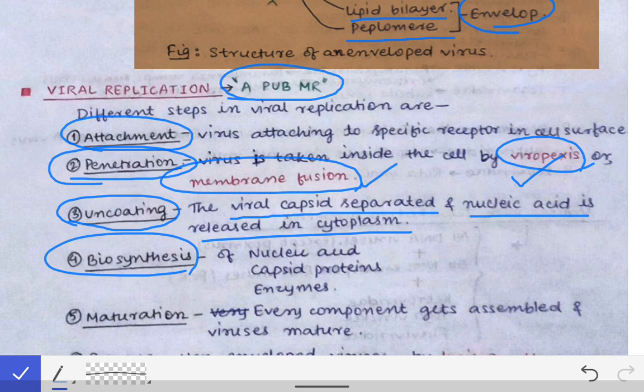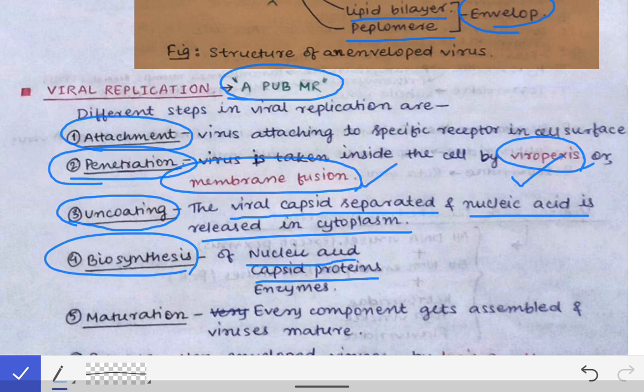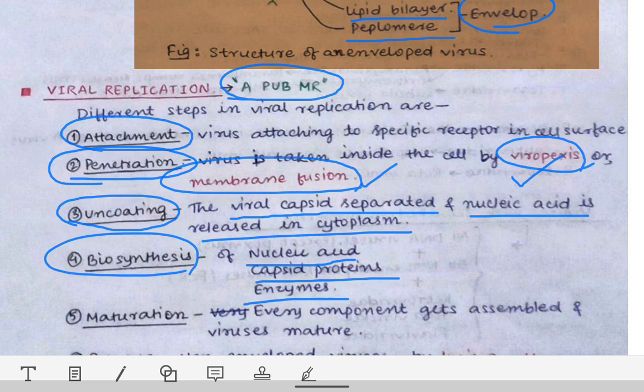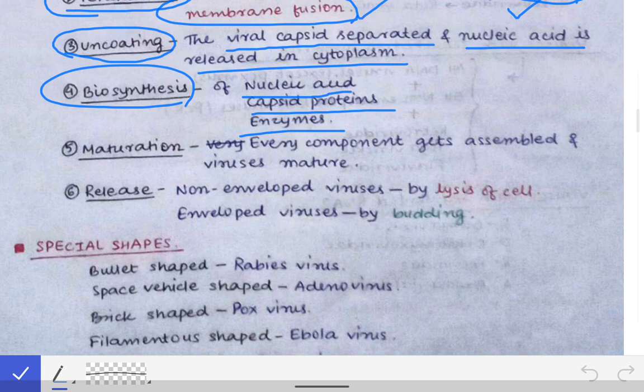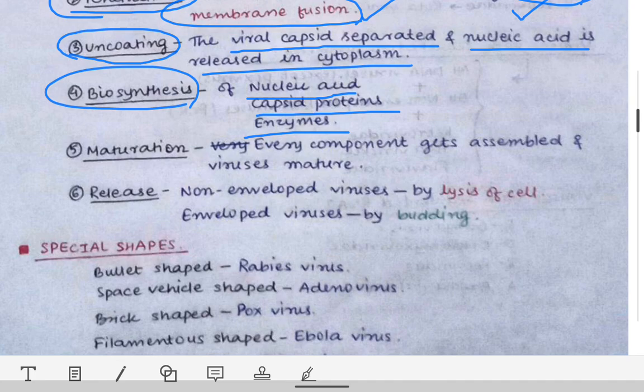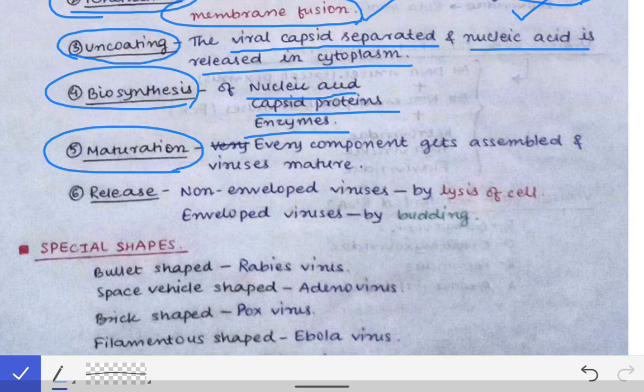The next step is biosynthesis. In biosynthesis, different structures of the virus are formed inside the host cell. The nucleic acid of the virus is replicated or transcribed; capsid proteins are synthesized; and viral enzymes are also synthesized. After biosynthesis, the next step is maturation.